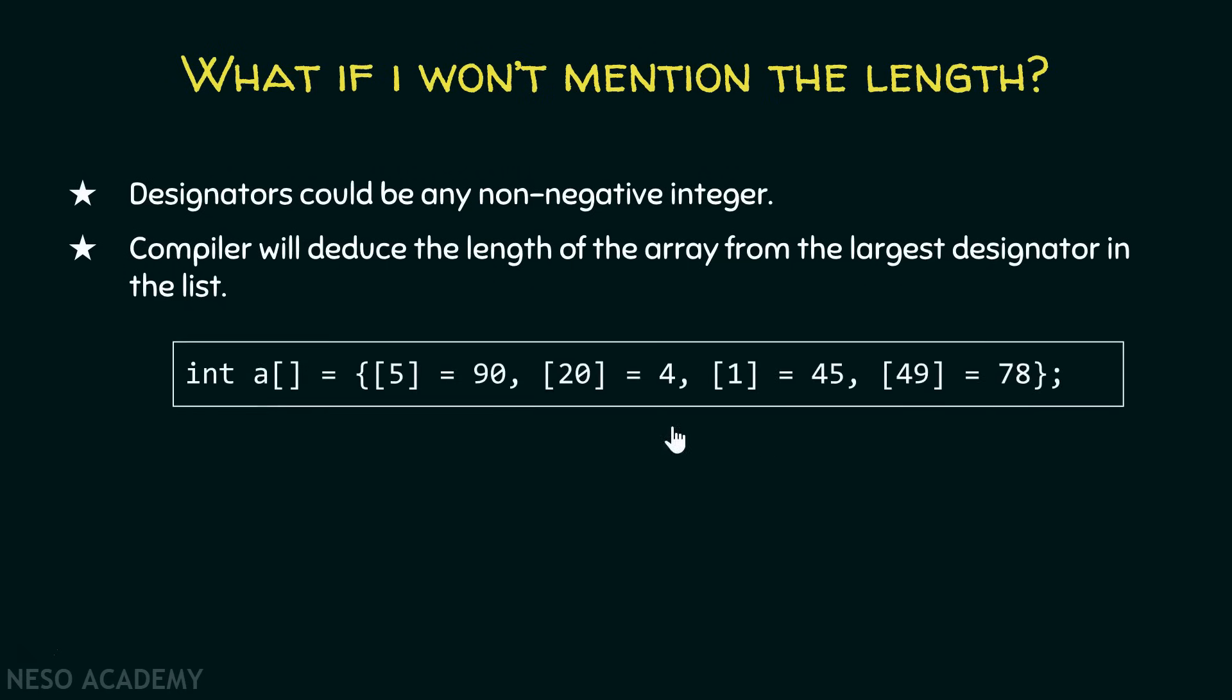You can mention as many designators you want and compiler will deduce the length of the array from the largest designator. Like for example, we have something like this. In this case, you are not mentioning the length over here, and you are simply specifying the designators as much as you want. You can see that this is the largest designator over here.